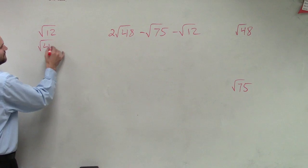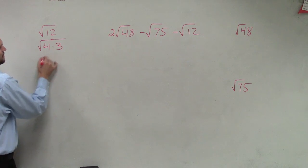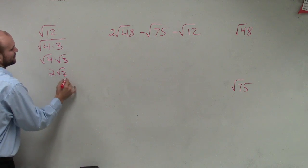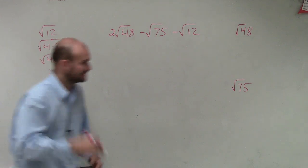Square root of 4 times 3. Square root of 4 times the square root of 3. 2 square root of 3, right? Good, we got that one.